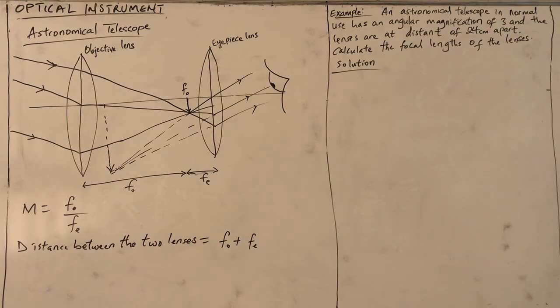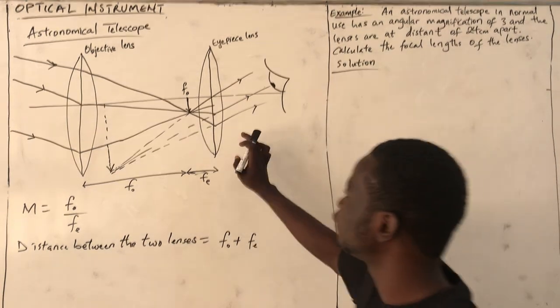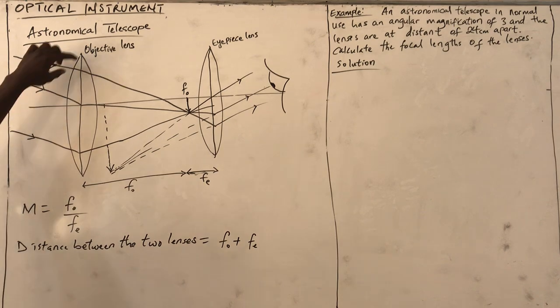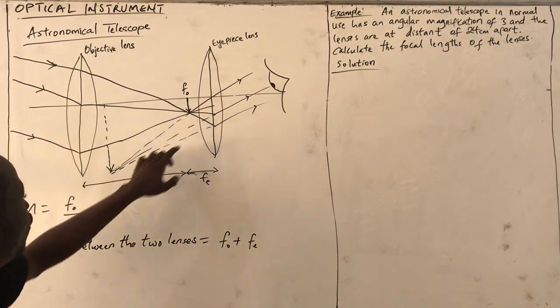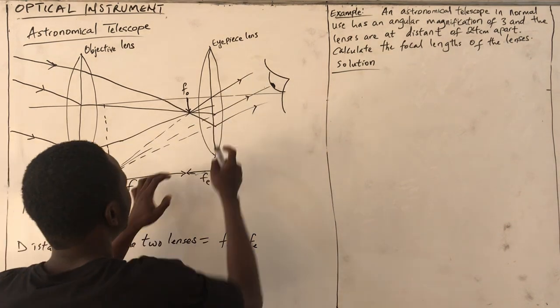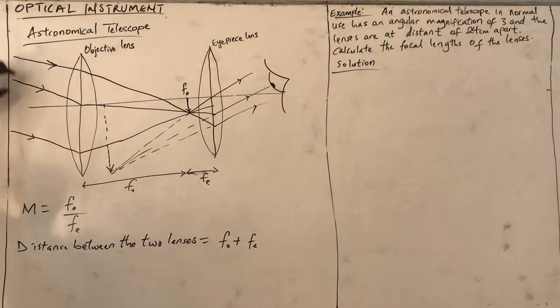The astronomical telescope, like the microscope, consists of two lenses. But unlike the compound microscope, the focal length of the objective lens is longer than that of the eyepiece.